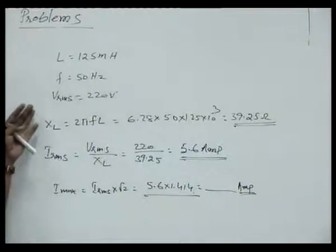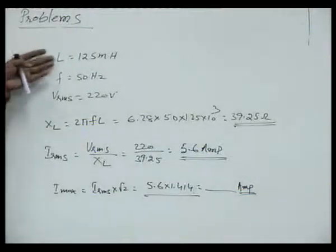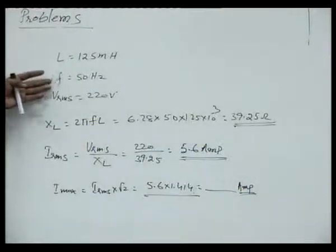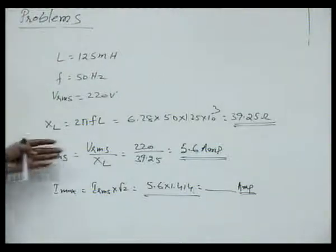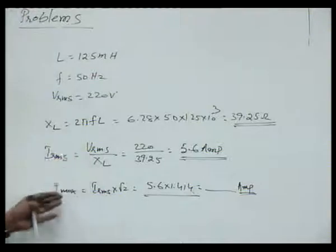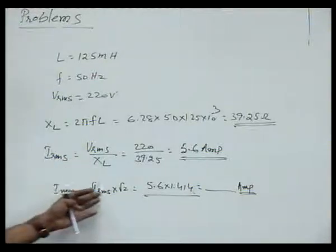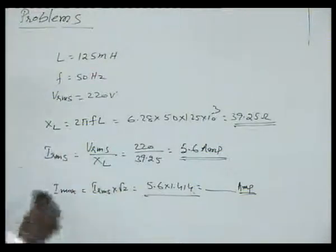So based on the inductor I have done this problem. Wherever the values of inductance, frequency, and RMS voltage are given, we can first calculate the inductive reactance, then RMS current is nothing but voltage upon reactance, and then maximum value is equal to RMS current into root 2.